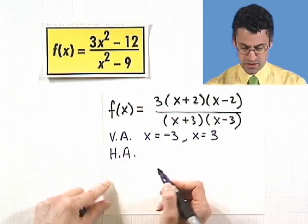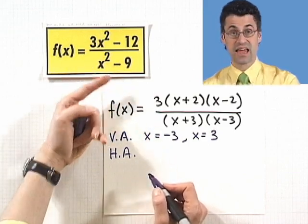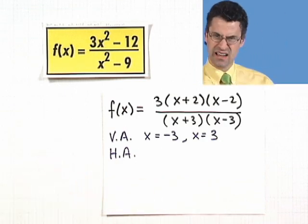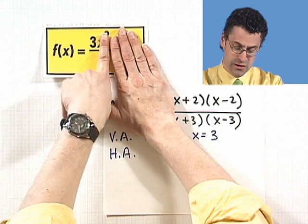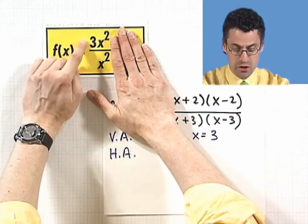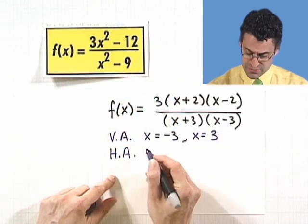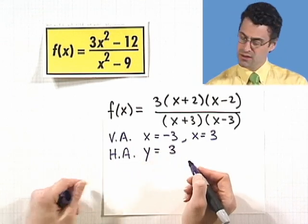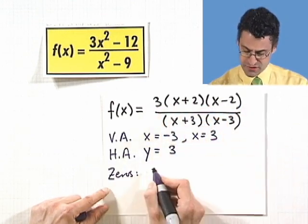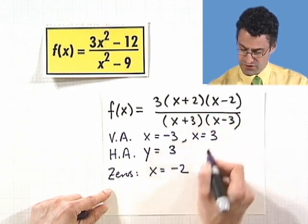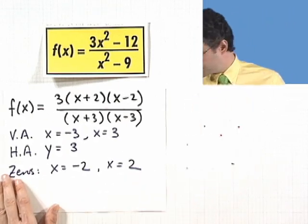For the horizontal asymptote, notice this is a quadratic divided by a quadratic, so the degrees are the same. The lower order terms don't matter — since we have a tie, the x squared terms cancel and we're left with 3 over 1. Taking the leading coefficients gives us 3, so there's a horizontal asymptote at y equals 3. The zeros are where the numerator equals 0: x equals negative 2 and x equals 2.